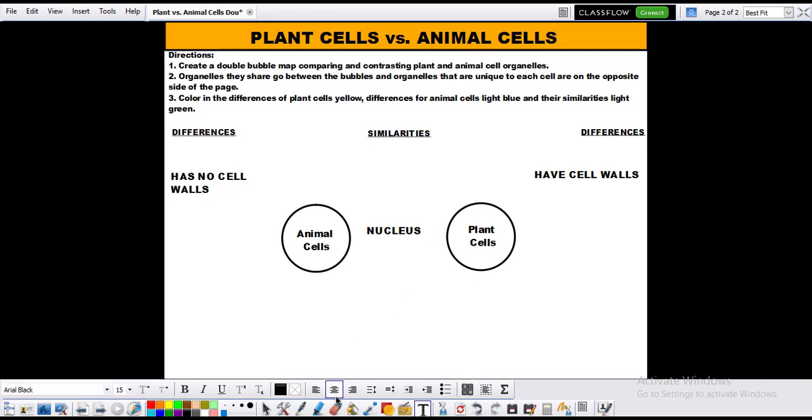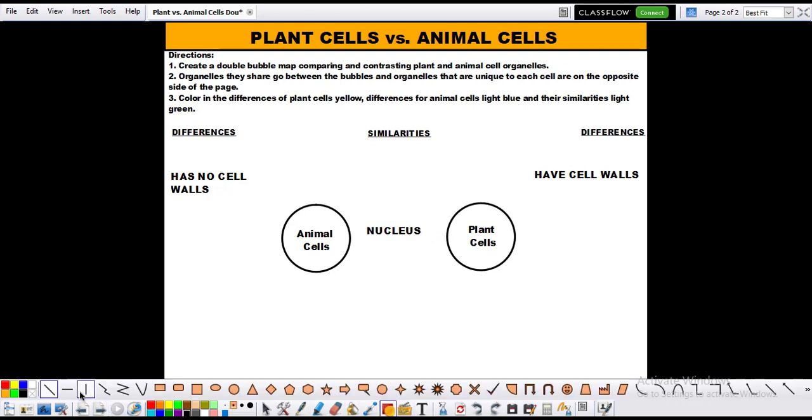OK, once you listed them, then all you have to do is connect them to their bubbles. All right. So I'm just going to draw a line connected to that bubble and draw a line here connected to this bubble. And then since the nuclei is shared between the both of them or the nucleus is shared between the both of them, I'm going to connect both of those together.